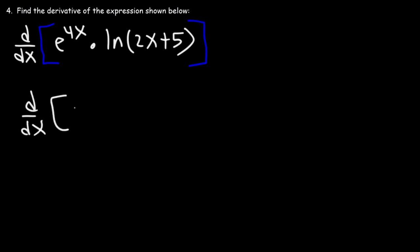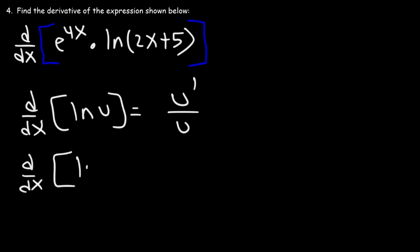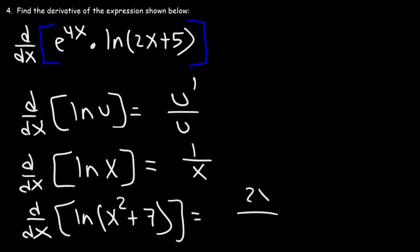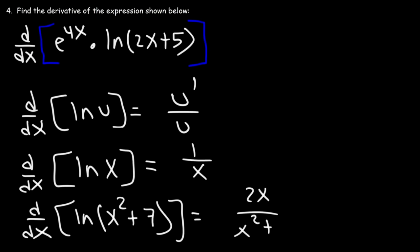The derivative of ln u with respect to x is u prime divided by u. For example, the derivative of ln x is 1 over x. The derivative of ln of x squared plus 7 is 2x over x squared plus 7.